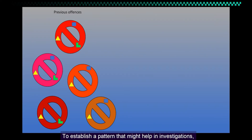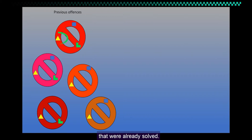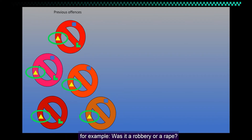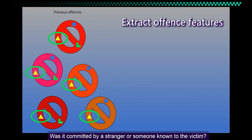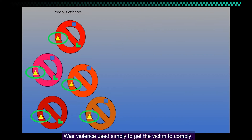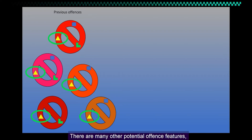Let's work through an example. To establish a pattern that might help in investigations, researchers looked at a large number of different offenses that were already solved. The symbols within each offense represent an offense feature — for example, was it a robbery or a rape? Was it committed outdoors or indoors? Was it committed by a stranger or someone known to the victim? Was violence used simply to get the victim to comply, or was it used because the offender really wanted to be that violent? There are many other potential offense features, so this is just a small sub-selection.